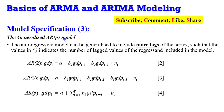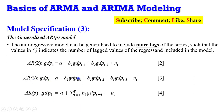The autoregressive model can be generalized to include more lags. The number in parentheses tells you how many lags are included. An AR(2) process means the dependent variable is explained by two lags — T minus one and T minus two. An AR(3) process includes three lags, and an AR(P) process in its generalized form means the dependent variable is explained by P lags.